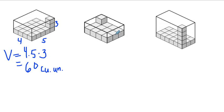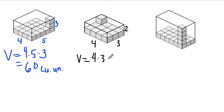The next one has a base that is four cubes long and three cubes wide. The height is two cubic units tall — one on top and one right underneath. So the volume is four times three times two. Four times three is 12, and 12 times two is 24 cubic units, since no measurement is given.